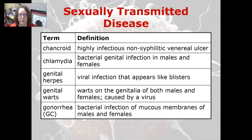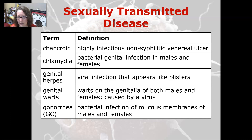Lastly, we're going to look at the sexually transmitted diseases. Chancroid is a highly infectious non-syphilitic venereal ulcer. Chlamydia is a bacterial genital infection in males and females. Genital herpes is a viral infection that appears like blisters and affects males and females. Genital warts are warts on the genitalia of both males and females, caused by a virus, usually HPV.